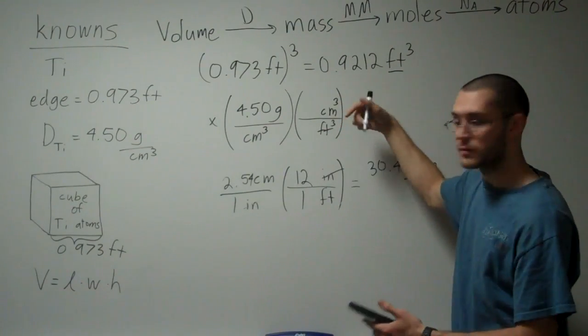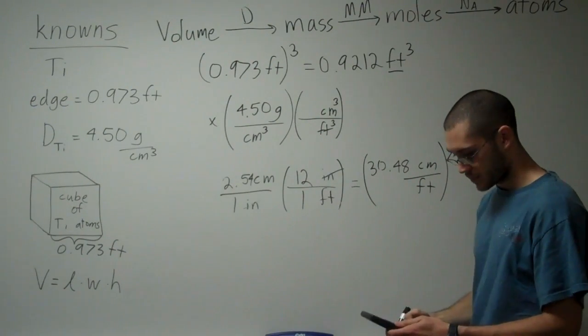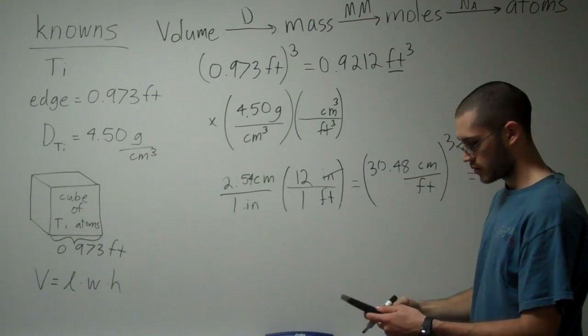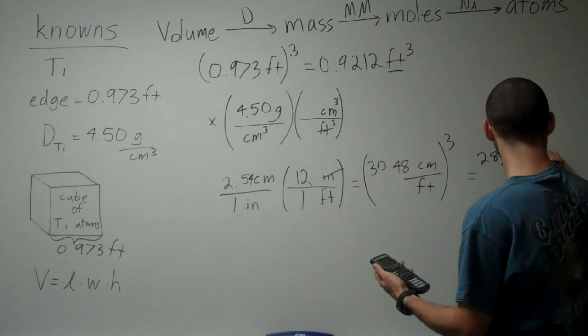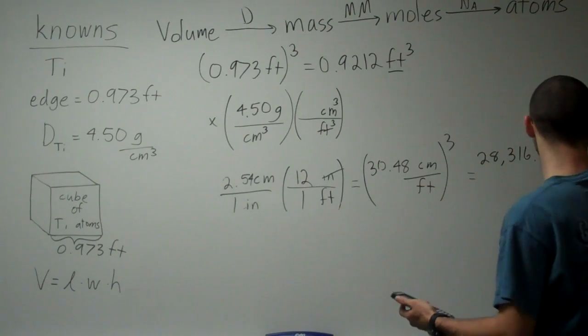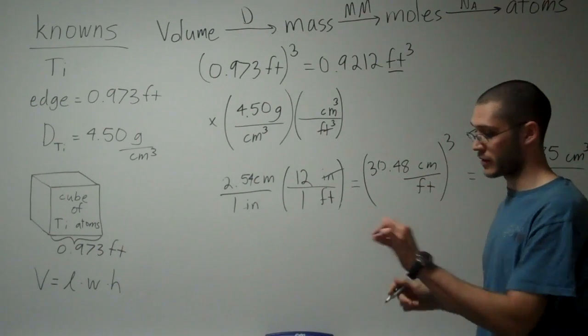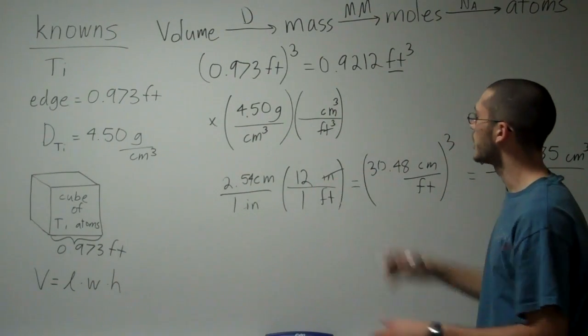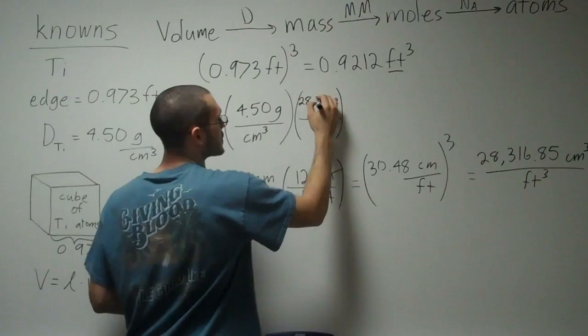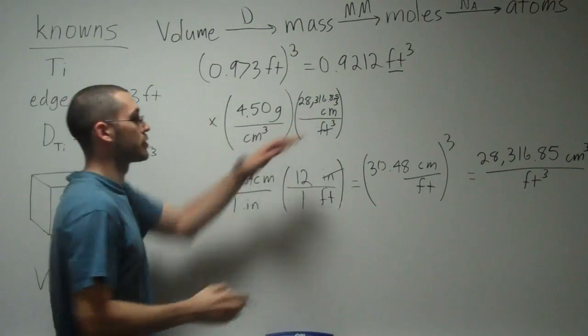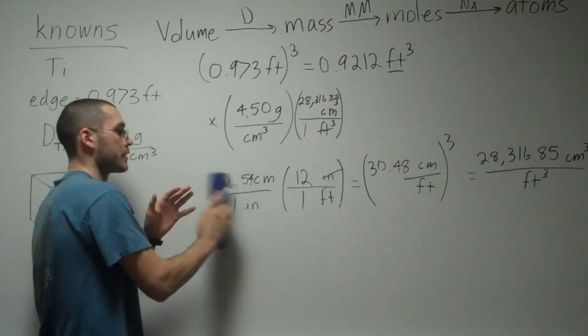But I'm looking for centimeters cubed in feet cubed. So I'm going to take this whole conversion factor and I'm going to cube it. Actually cube your 30.48 here, and I get 28,316.85 centimeters cubed per foot cubed. That's a pretty realistic answer, because a centimeter cubed is very small, while a foot cubed is a foot by foot by foot box. So here's the number that I'm going to be plugging in for this conversion: 28,316.85 centimeters cubed in one foot cubed.